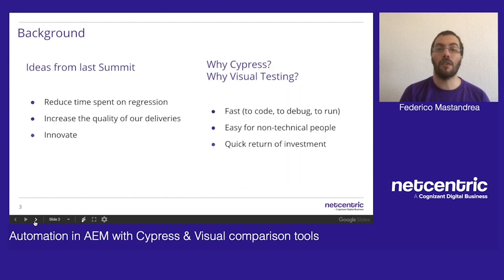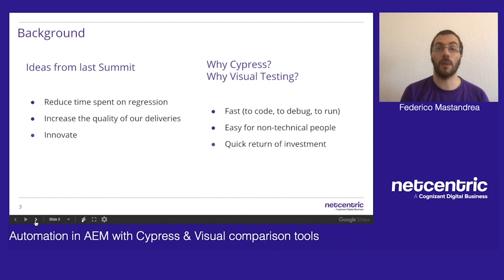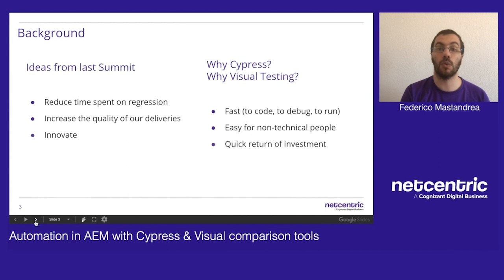A little bit of background here. At the last summit, the 2019 edition, we did a great brainstorming session between the QA community and realized that we needed to reduce the time spent on regression tests. That would help us to be more confident with our releases to production and to use that saved time to increase the quality of our deliveries.